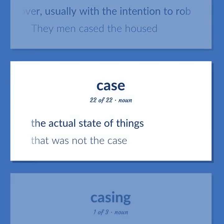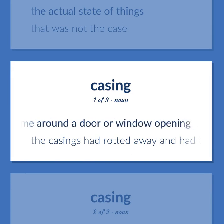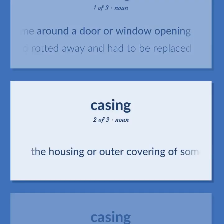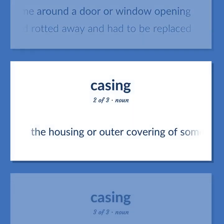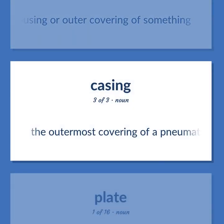The actual state of things. That was not the case. The enclosing frame around a door or window opening. The casings had rotted away and had to be replaced. The housing or outer covering of something. The outermost covering of a pneumatic tire.